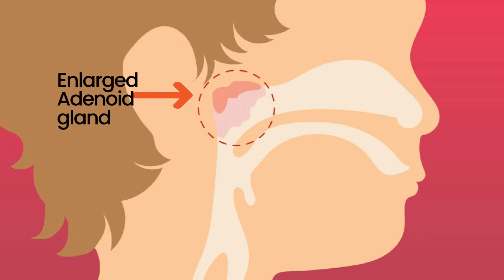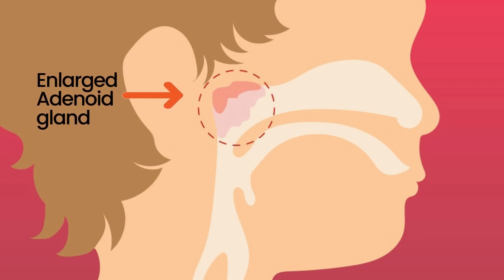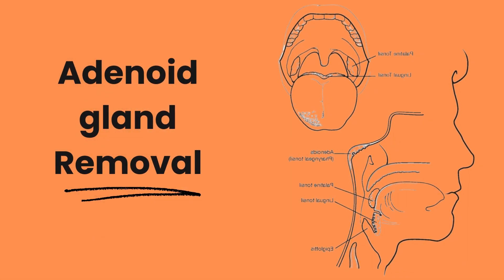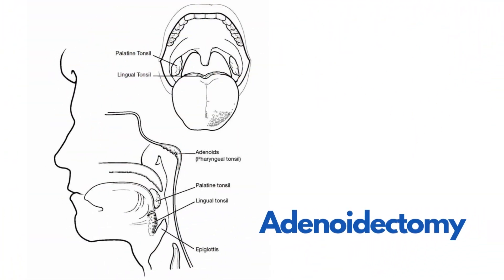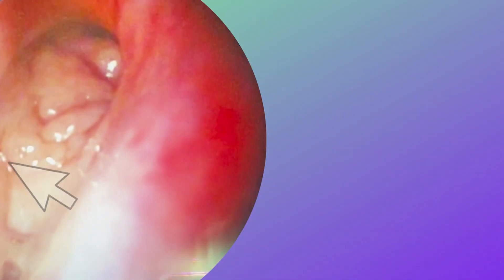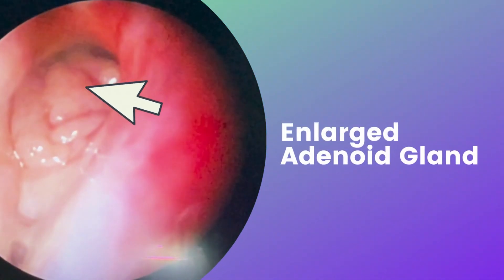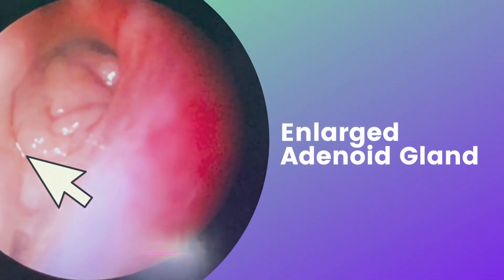The adenoid gland is a small lump of tissue located at the back of the nasal cavity, above the tonsils. Adenoid gland removal, also known as adenoidectomy, is a surgical procedure that involves removing the adenoids.